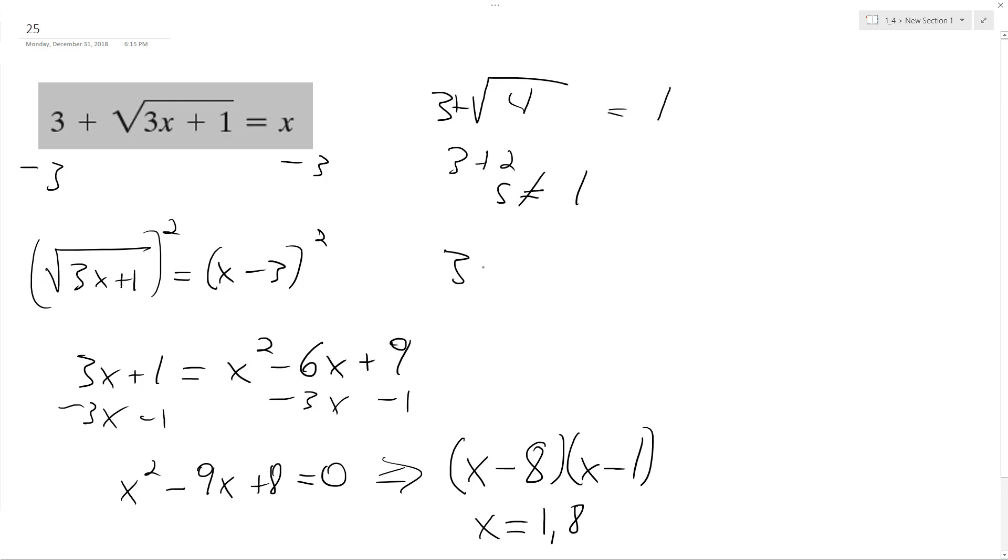But, what about 8? So, 3 plus the square root of 3 times 8 plus 1 equals 8. This ends up being 3 plus the square root of 25, which is 5, equals 8. 8 does equal 8.